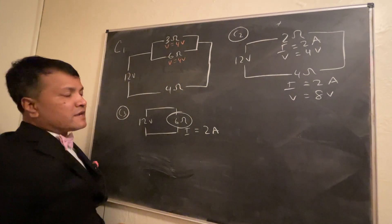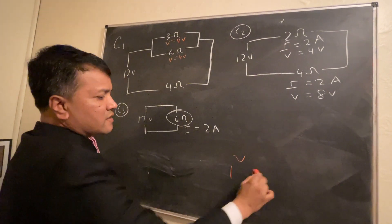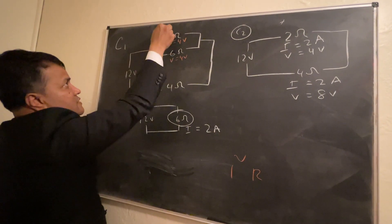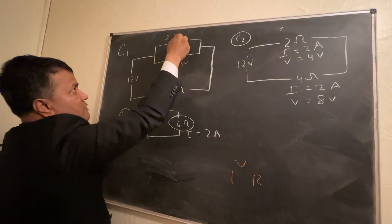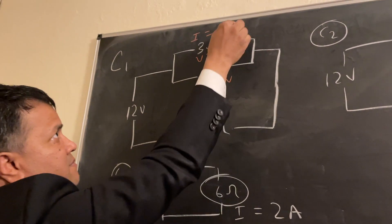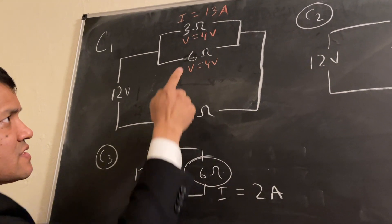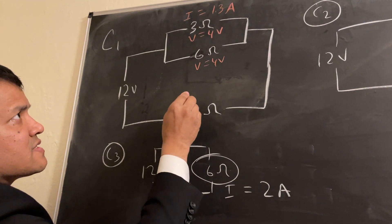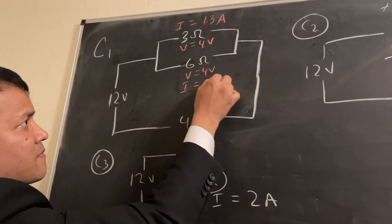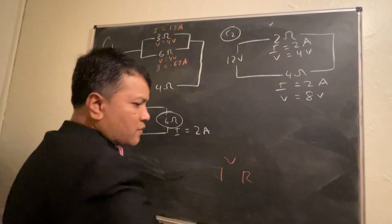Now we find the current through each parallel resistor using I equals V over R. Four divided by three is 1.3 amps through the three-ohm resistor. Four divided by six is 0.67 amps through the six-ohm resistor.